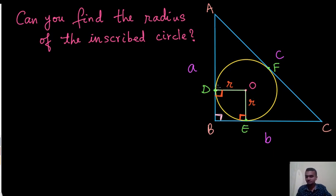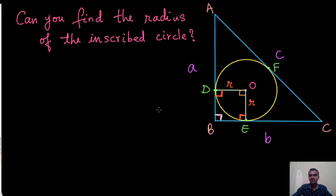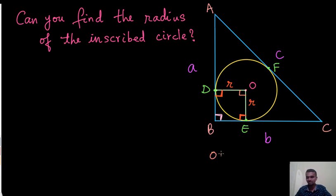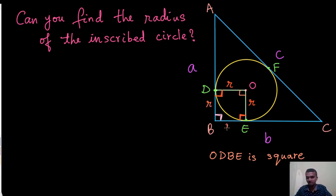Now observe quadrilateral ODBE. In ODBE, angle D is 90 degrees, angle B is 90 degrees, angle E is 90 degrees, which means the remaining angle O must also be 90 degrees. So we have a quadrilateral where all angles are 90 degrees and two adjacent sides OD and OE are both equal to R. Only a rectangle or square has all angles equal to 90 degrees, but in a rectangle adjacent sides are not equal — only in a square are adjacent sides equal. So ODBE is a square, meaning all sides are R, and therefore BE is also R.